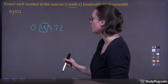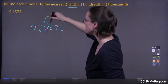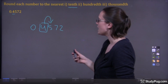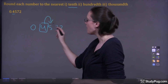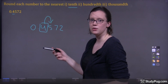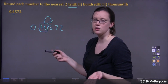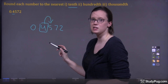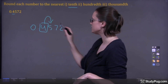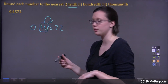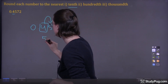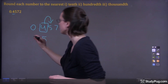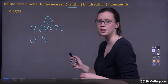So we're rounding to the nearest tenth, so we're going to put a box around that position. We're going to draw an arrow to the digit to the right of the tenth position. And now we can see that this is a five. So if you have a five here, or anything greater than a five — like a six, seven, eight, or nine — then the digit in the box becomes one bigger. So because this is five, it becomes one bigger, changing from four to five. And anything that comes before the digit we're rounding stays the same.